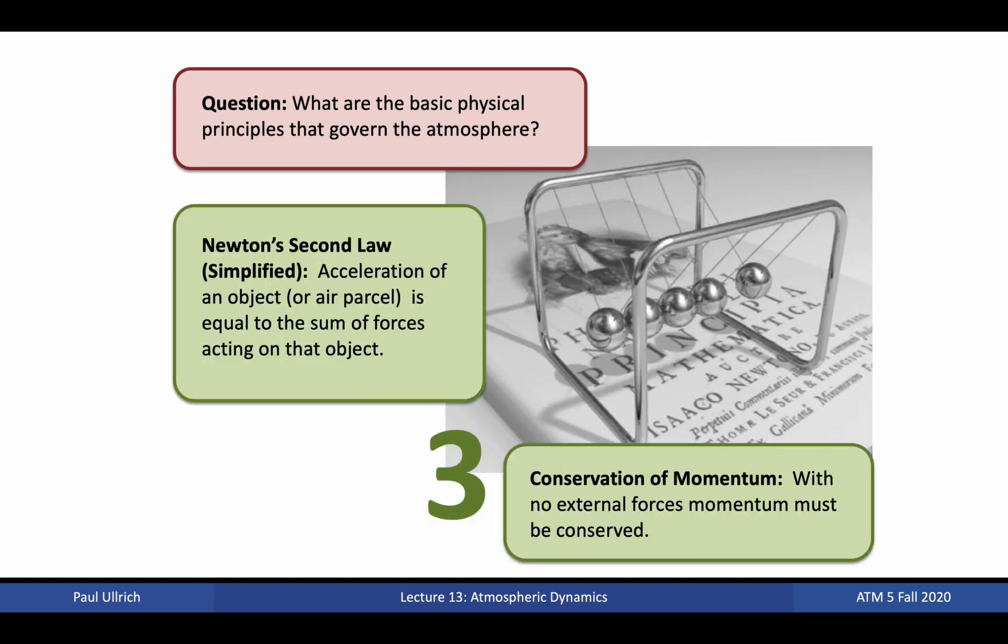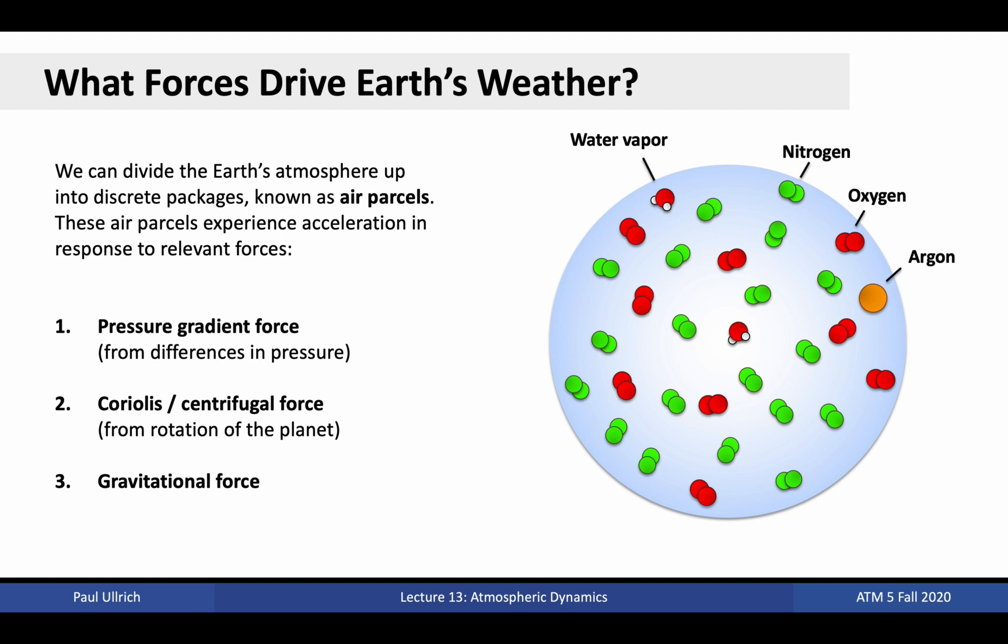The third physical principle is a consequence of conservation of energy, but gives us an important tool for understanding how the bulk motion of air parcels respond to their environmental forces. This principle is enshrined in Newton's second law of motion, which states that the acceleration an object, or an air parcel in our case, experiences, is equal to the sum of forces acting on that object. Some forces arise from air parcels interacting with one another, or because of gravity's pull. In the case of no external forces, this principle becomes a simple statement of conservation of momentum. With no external forces, the momentum of an air parcel must be conserved. Dynamics are most easily described in the context of air parcels. In this context, we can enumerate the three forces that are relevant for describing atmospheric motion: pressure gradient force, Coriolis and centrifugal force, and gravitational force. We'll now consider these three forces in detail.